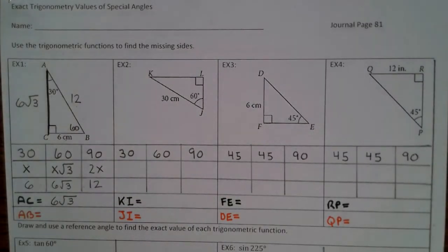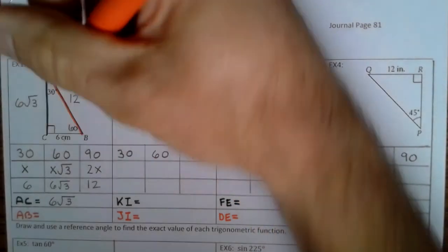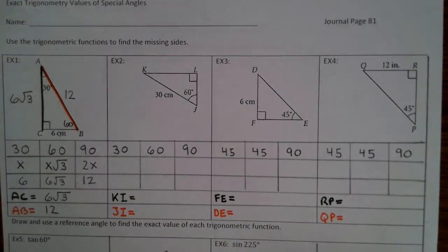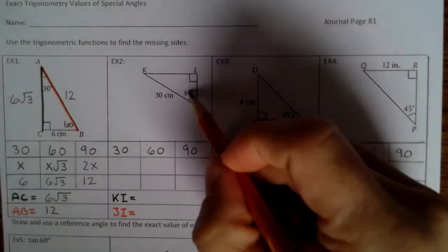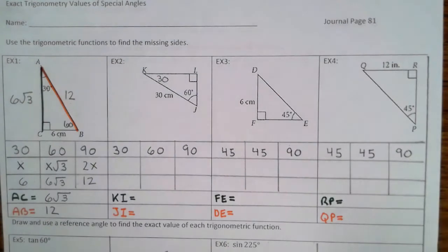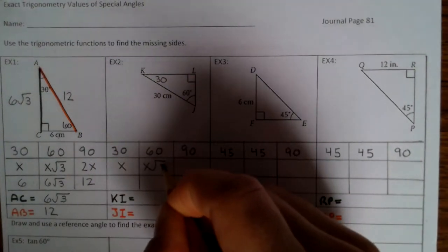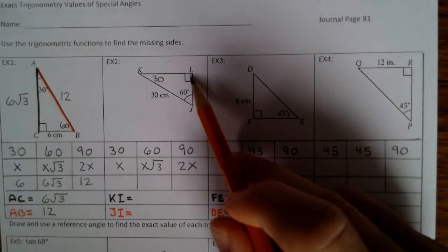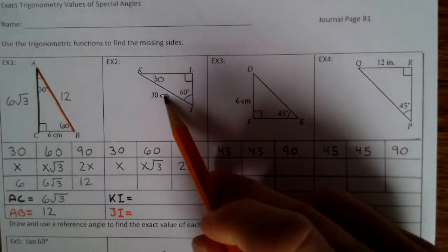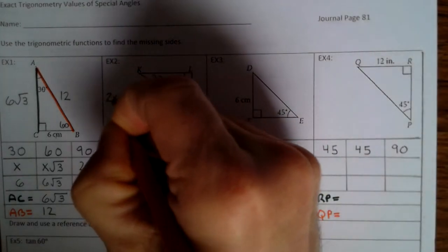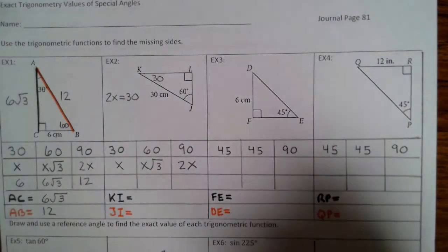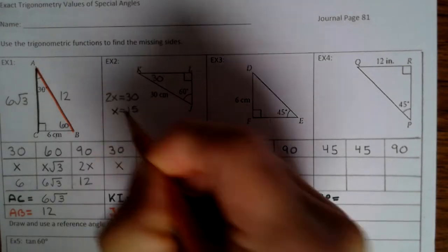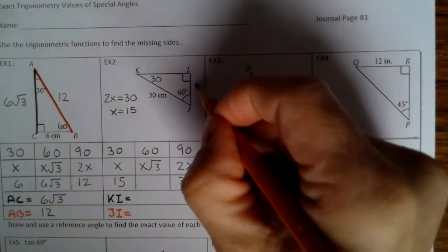Now let's find AB. AB is 12. Let's take a look at example 2. We see that if this is 60, this is 30, so this is a 30-60-90 triangle. That means this is x, x square root of 3, and 2x. The length across from 90 is 30, so 2x equals 30. Solving for x gives x equals 15. Across from 30 is 15, and across from 60 is 15 square root of 3.